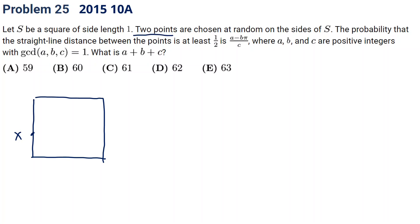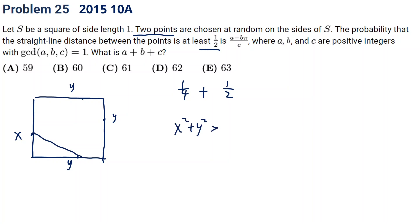Okay, let's come back. We have two points. Consider where point y is chosen relative to point x. First, there's a one-fourth chance y is located on the opposite side — this always gives distance greater than one-half. Then consider if y is chosen on an adjacent side — that's a one-half chance — and we need the distance to be at least one-half, so x squared plus y squared greater than one-half squared.